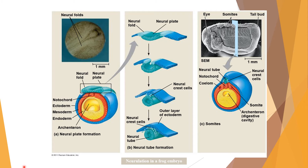This image shows neurulation in a frog embryo with the formation of neural folds. In the cross-sectional view, you can see the neural plate, neural fold, notochord, ectoderm, mesoderm, endoderm, and archenteron. Neural tube formation proceeds from neural plate to neural fold, then dissociation of the neural crest cells, and then the formation of the neural tube. The final stage shows the formation of somites — these are the progressive changes of the neurula of a frog embryo.